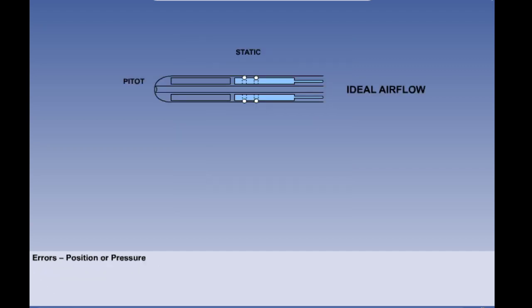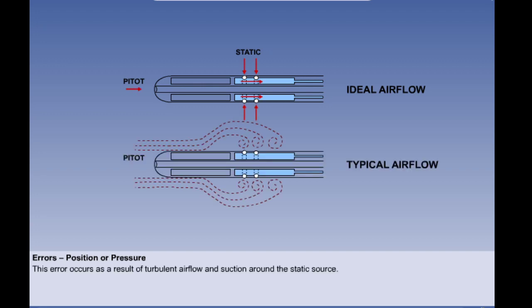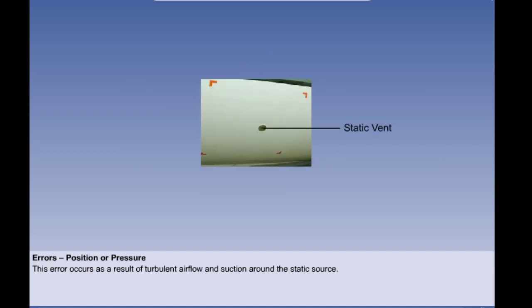Next is position error, also sometimes known as pressure error. Ideally, the static pressure sensed by the instrument should be the true static pressure undisturbed by the presence of the aircraft. However, the presence of the aircraft will have an effect on the static pressure sensed, and position error occurs as a result of turbulent airflow and suction around the static source. We can see the effect of a typical airflow around a combined pitot static source. Around 90% of pressure error can be eliminated by the use of a separate static source or vent which can be located in a place where turbulence is minimum, usually the side of the fuselage.